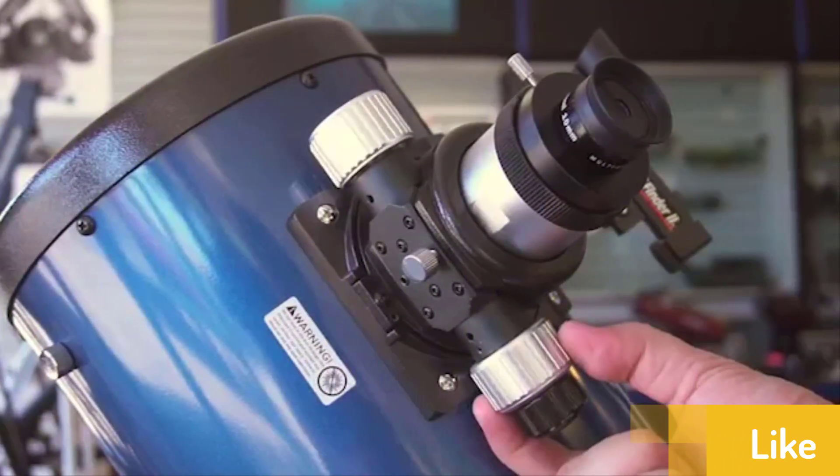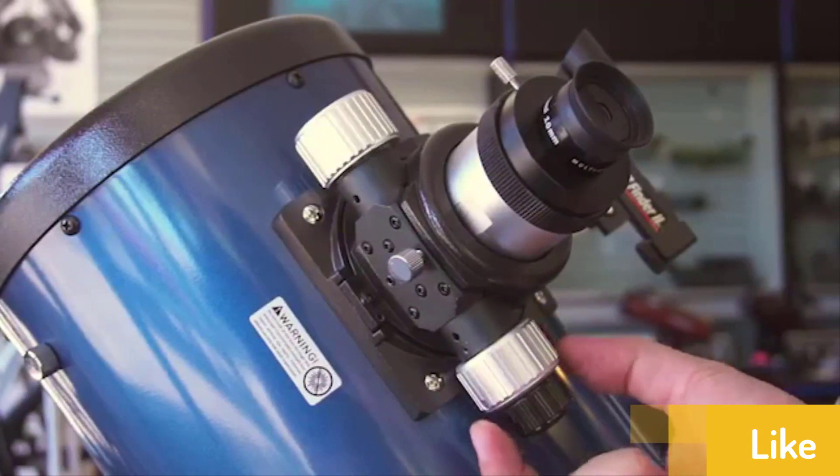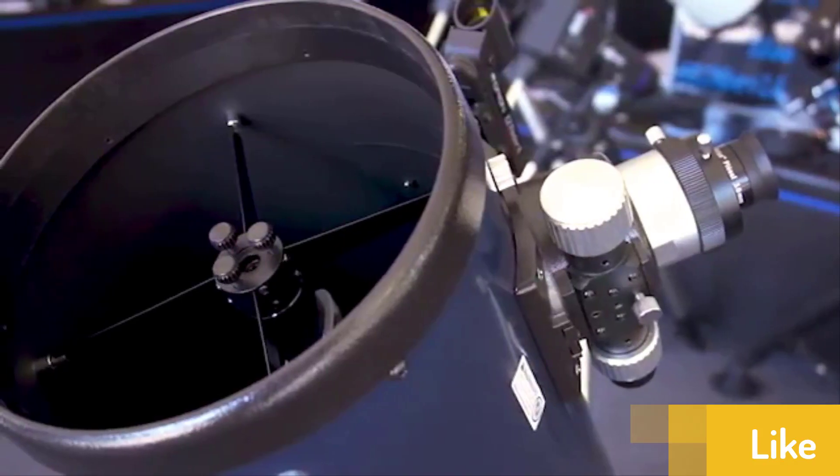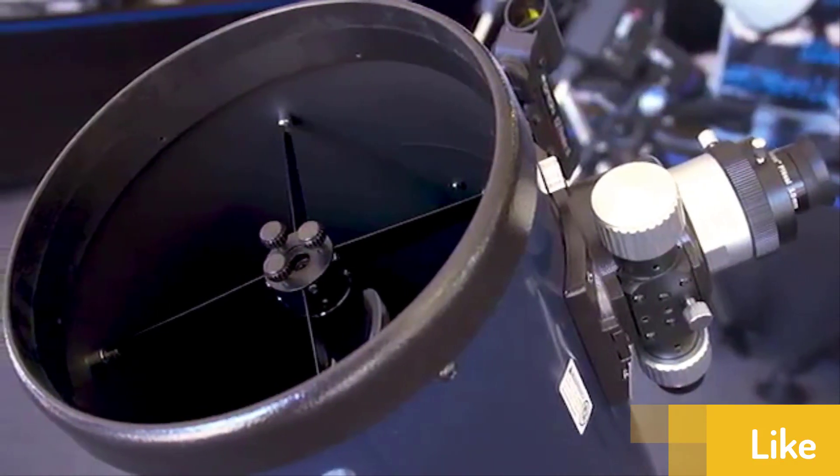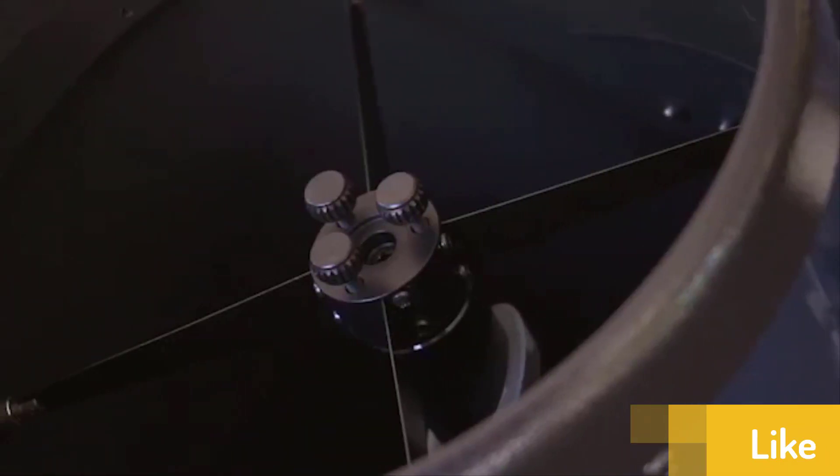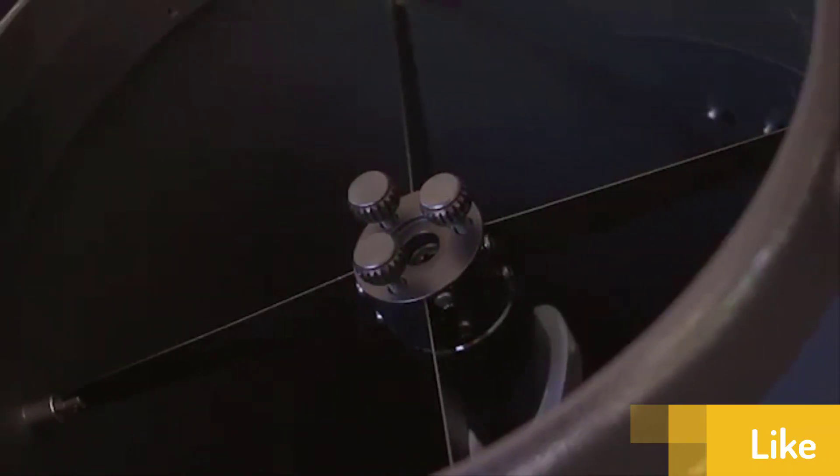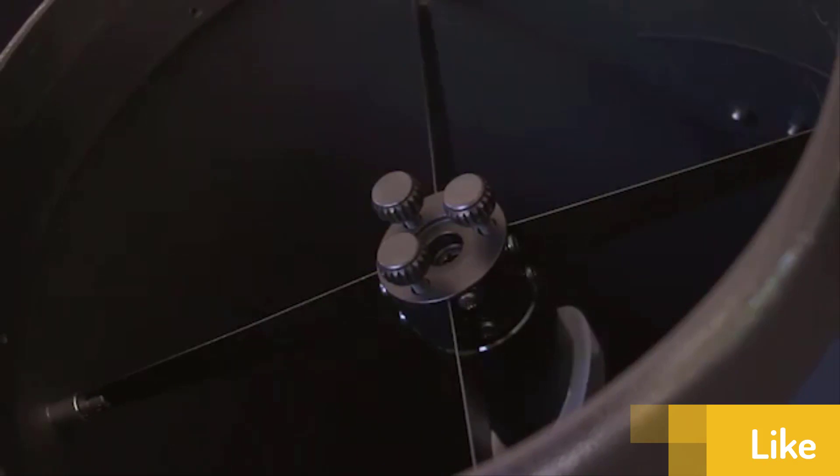We also found that the thumbscrew to collimate it turns easily enough but it is challenging to get it set the way you want it. It's also tricky to get proper fine adjustments. This is a decent telescope but remember that you're not at the top level anymore, so you'll find that things like the finder aren't made with the same quality as the previous models.